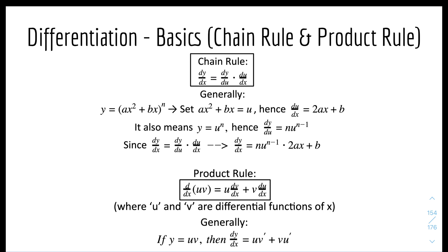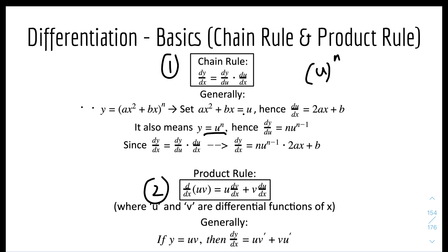Now we have the chain rule and product rule. Generally, dy over dx equals dy over du times du over dx, because the du terms cancel out. In application, if y equals (ax squared plus bx) to the power of n, set u equals ax squared plus bx, so y equals u to the power of n. Differentiating dy over du gives nu to the power of n minus 1, and differentiating u with respect to x gives 2ax plus b. You then multiply them together by the chain rule.